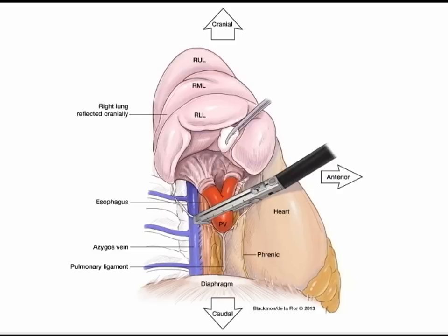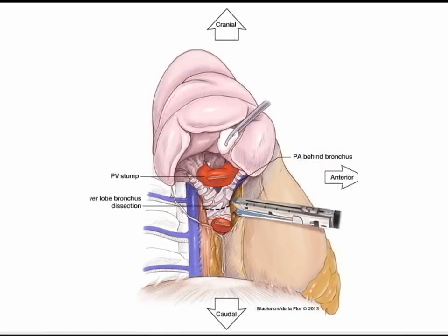Once the structure has been encircled, stapled, and divided, just behind it you will begin to see the bronchus. After dividing the pulmonary vein, the lung is continuously retracted superiorly, and the right lower lobe bronchial branches are exposed. Be sure when encircling the bronchus to the right lower lobe that you do not include the right middle lobe branches and that you are including the superior segmental branches.